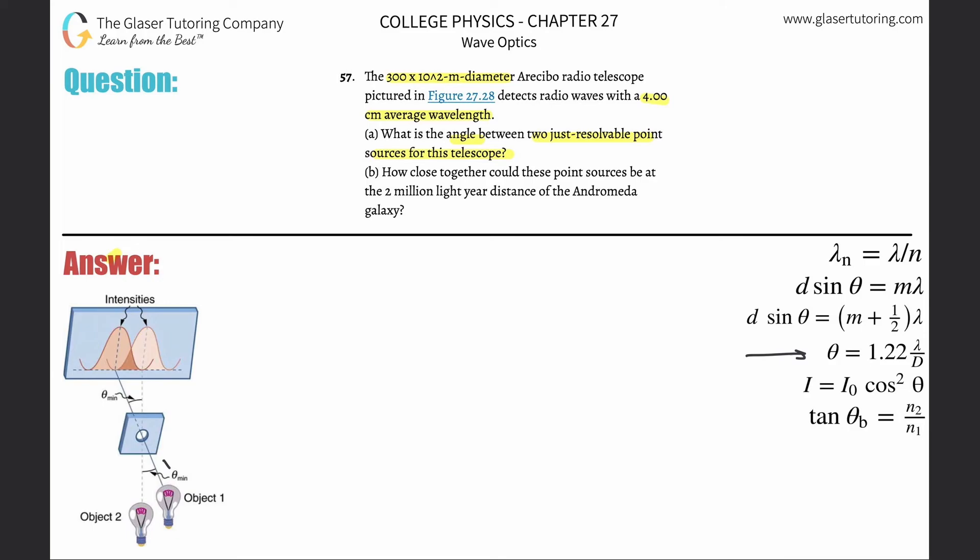We have a formula that deals with this. It tells us that the angle between those two point sources is going to be equal to 1.22 multiplied by the wavelength of the electromagnetic radiation divided by the diameter of the aperture.